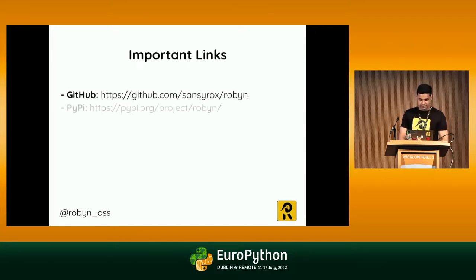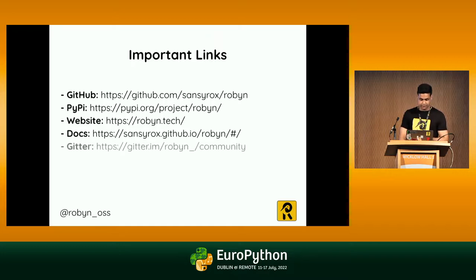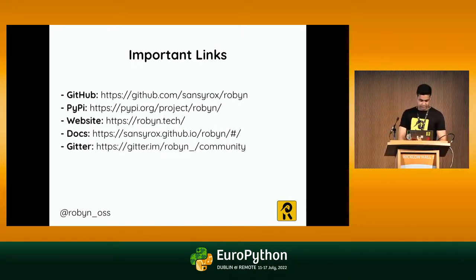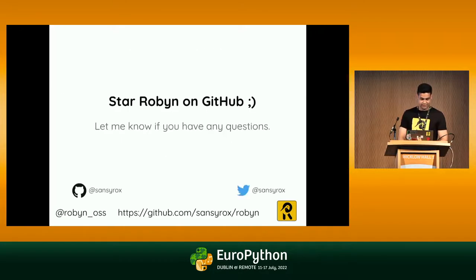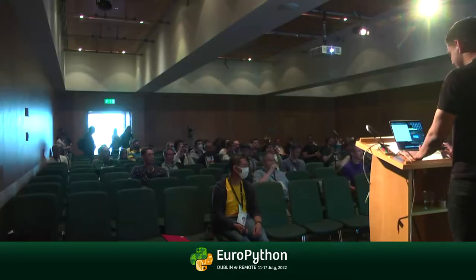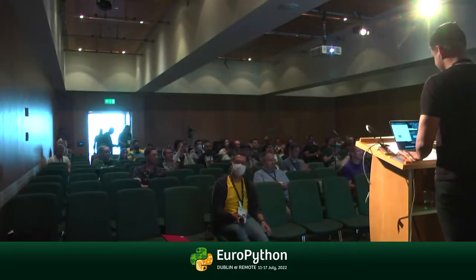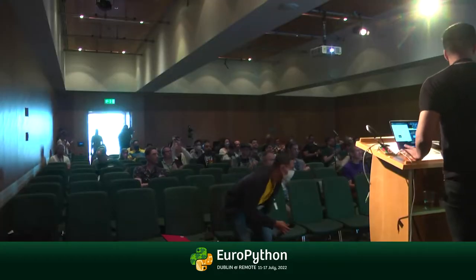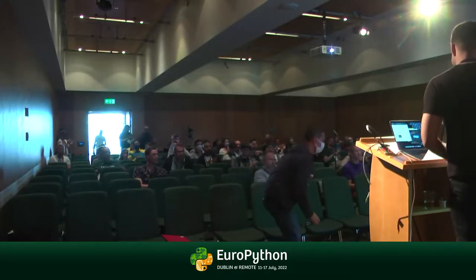Here are some important links: the GitHub link, the PyPI link, the website, and the docs. Star Robin on GitHub and let me know if you have any questions. Also, we are hiring at Bloomberg.